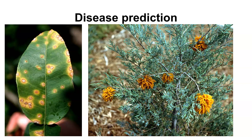For citrus canker, you look at what conditions are necessary for its spread. In Florida, whenever they find a tree with citrus canker, they remove all additional trees within a 1,500-foot radius. They don't believe it spreads that far under normal conditions, but this approach is part of disease management and disease prediction.